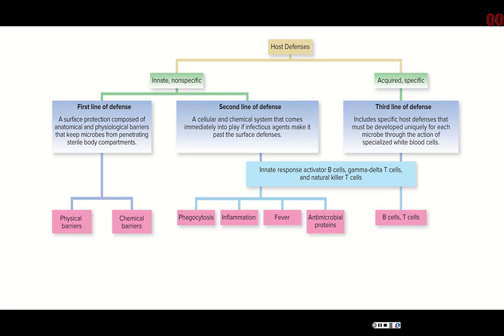There's the first line of defense — your physical and chemical barriers. The goal of the first line of defense is just to keep pathogens out so that they cannot even cause an infection. Once they're inside your body and reproducing, that means you now have an infection. And if they start disrupting your cells and tissues and causing damage, then you're going to have a disease. That's basically the definition of infectious disease.